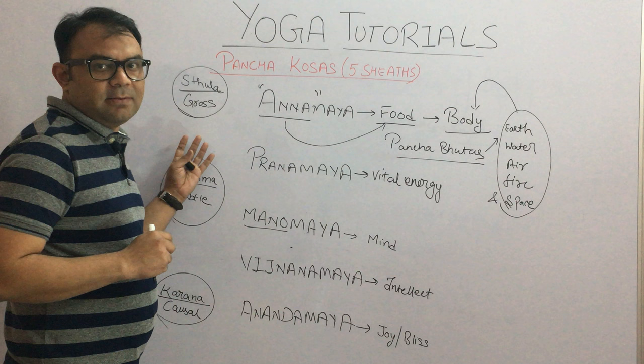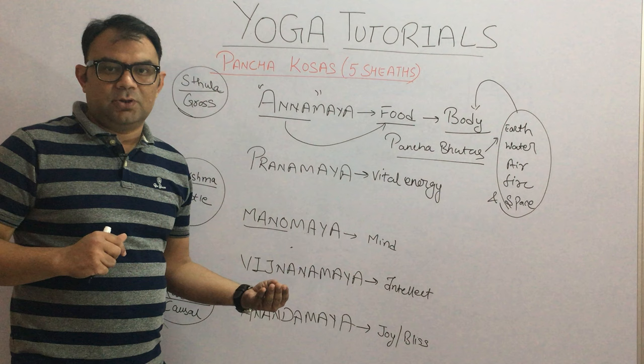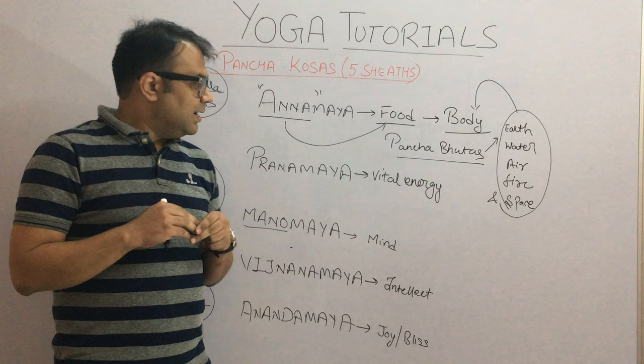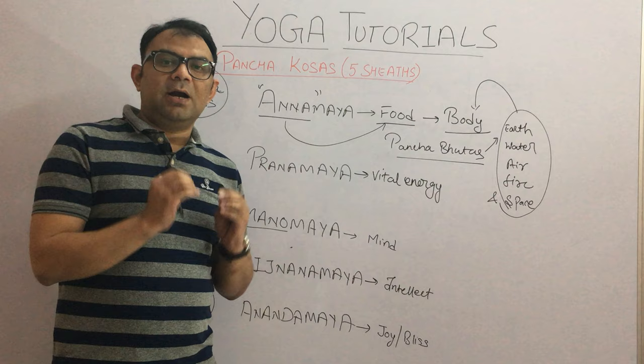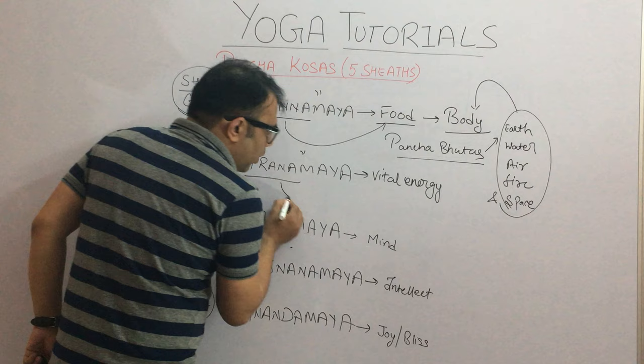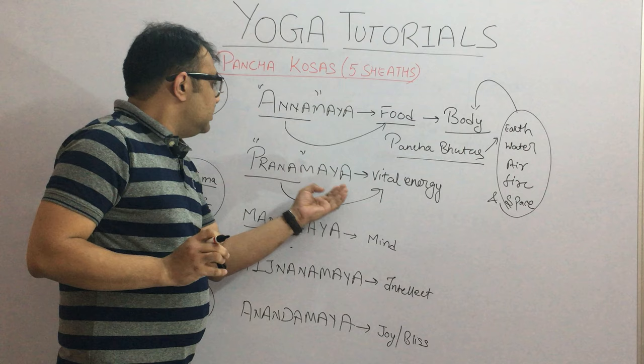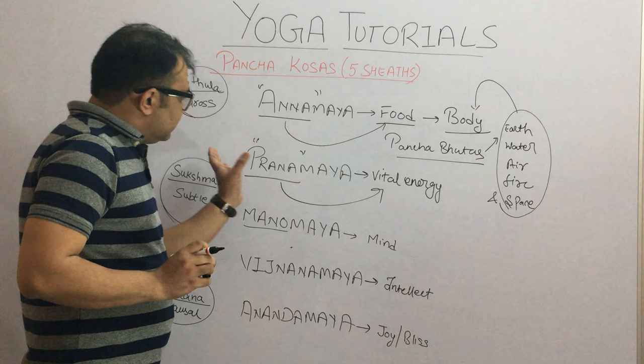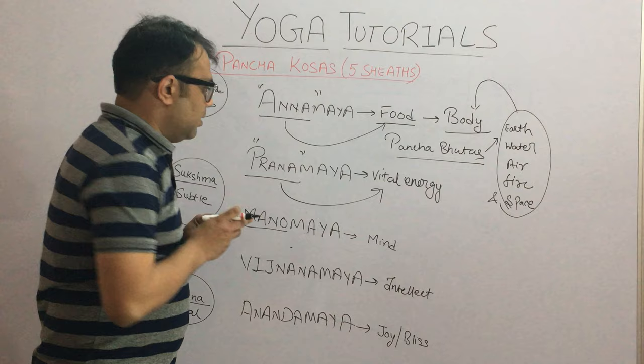But again Varuna told him: oh my son, go again and do some more research. He went back to the woods and this time he came up with another discovery. He told his father: this is not Anna — this is the Prana, the vital energy. What executes this body is the Prana. Prana is responsible for executing this body. That is the Pranamaya Kosha, the second sheath of life.